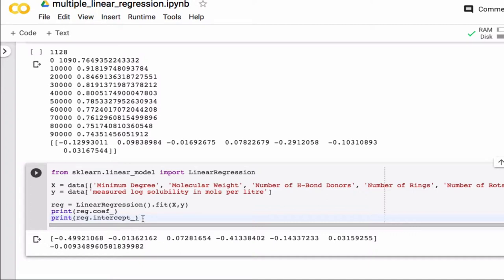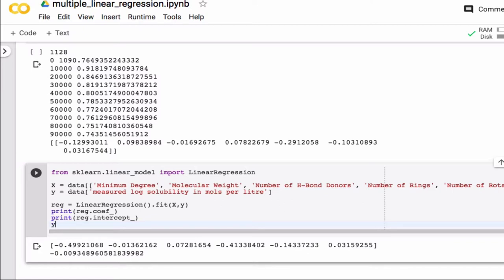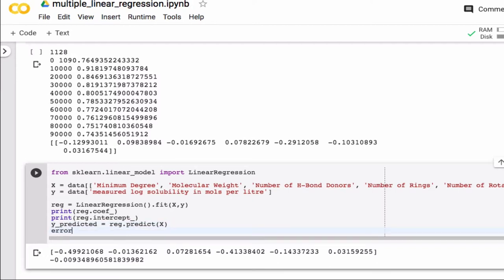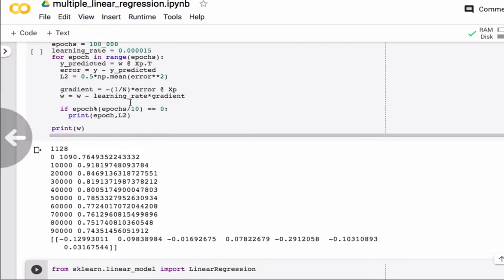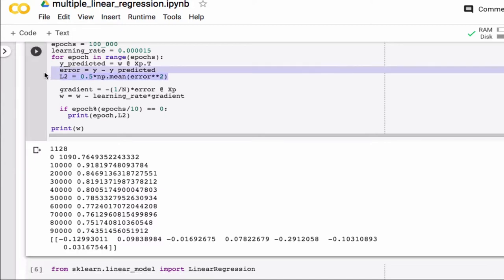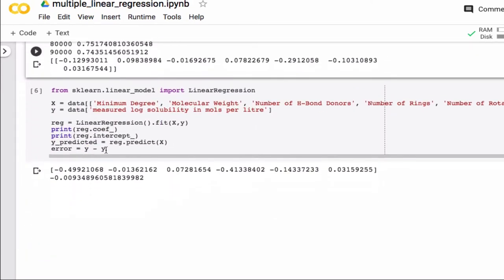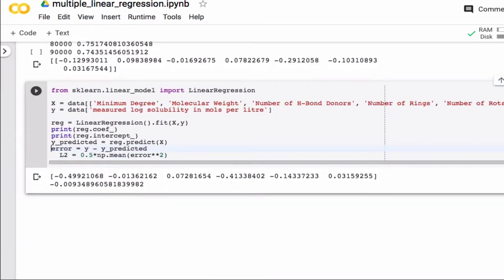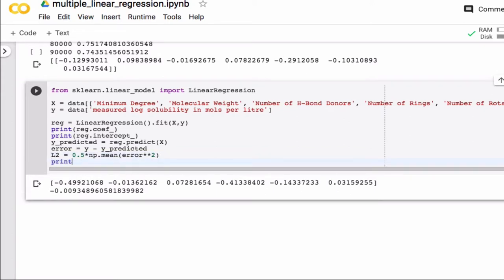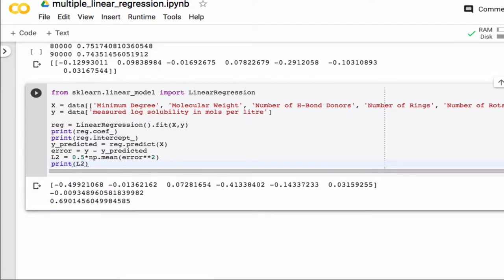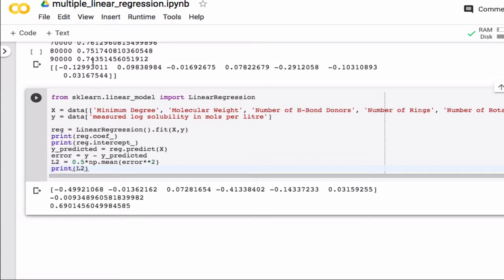Okay, so what's the error on this? We can predict the y values based on the x values and compute an error just like before. So I can just copy this code. The L2 error is 0.69, so we still have a ways to go here. And that's why these values are a little bit different.